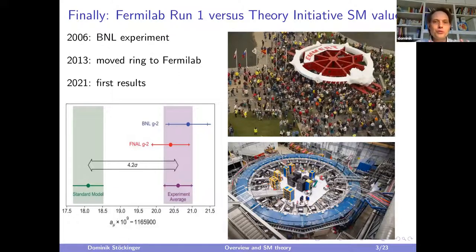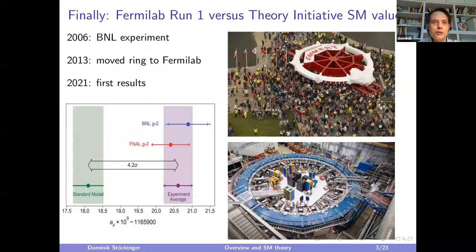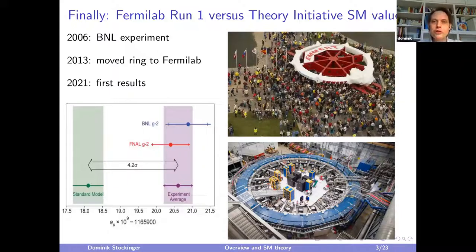Last year in April there was real enthusiasm when the Fermilab experiment published the first result of their g-2 measurement. There was a prehistory: in 2006, an experiment at Brookhaven National Lab already found a tantalizing deviation between the standard model prediction and experiment at the level of three sigma. This motivated repeating the experiment with higher precision at Fermilab, where the muon infrastructure is better, and the ring was transported there.